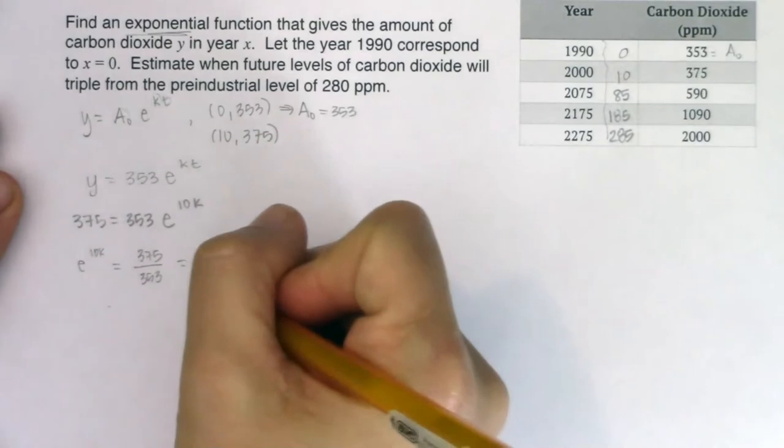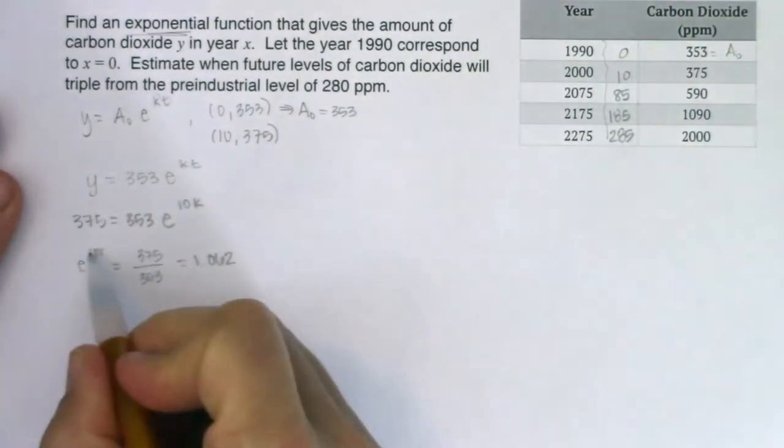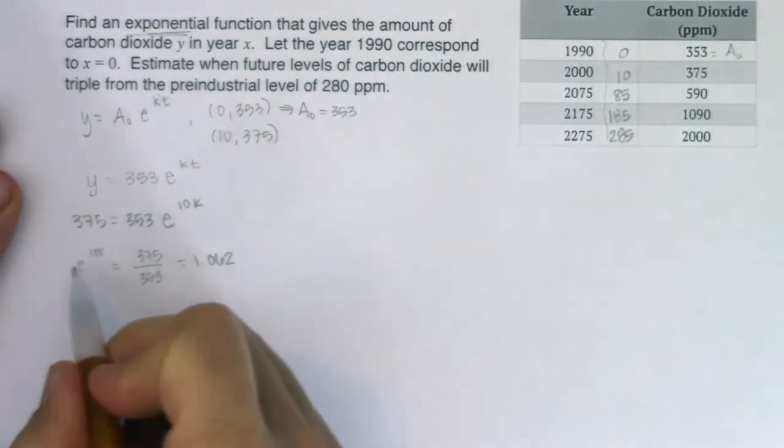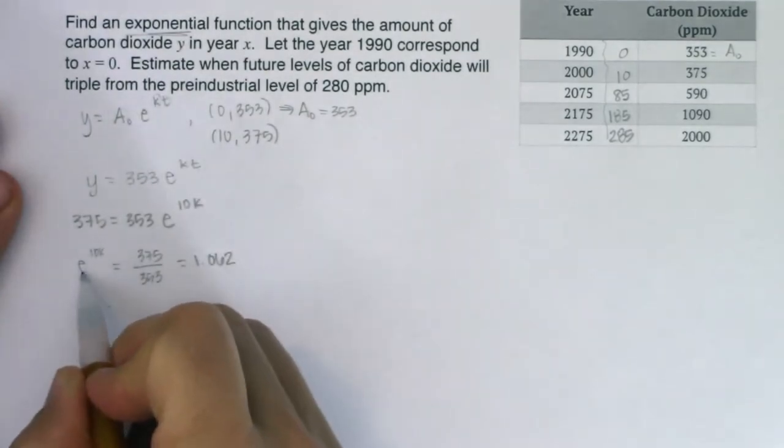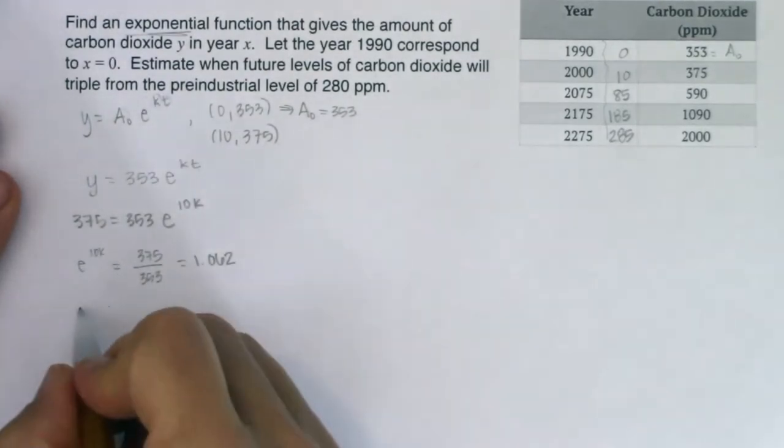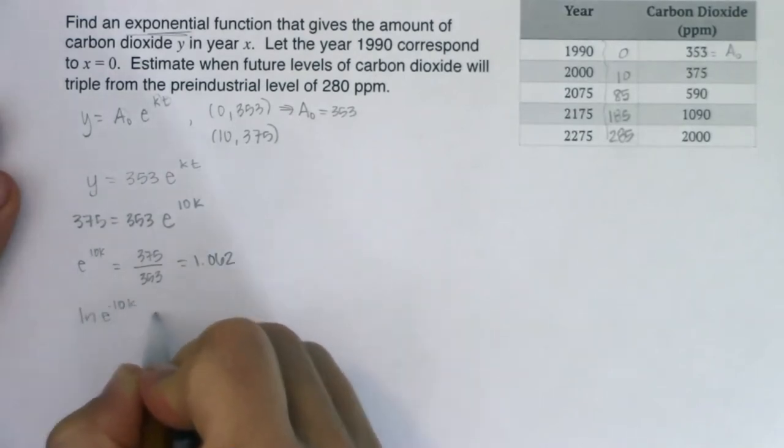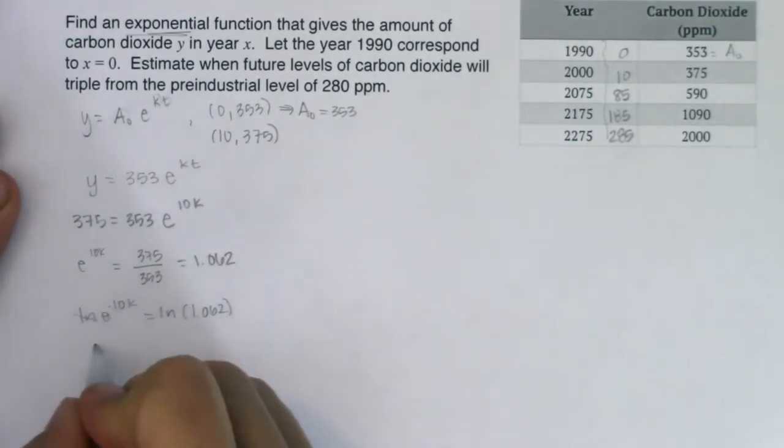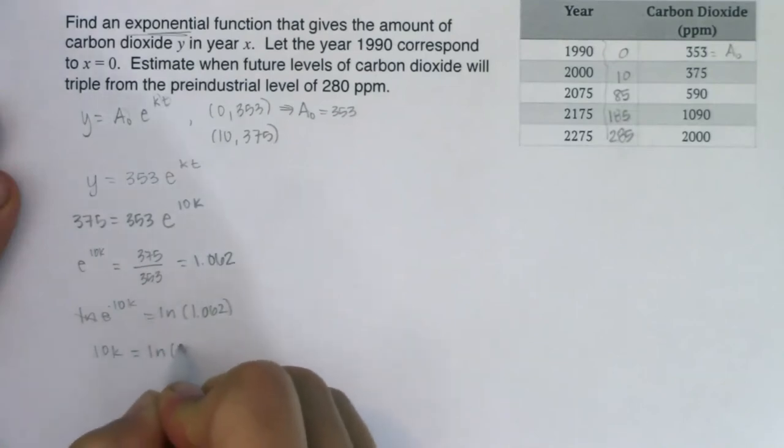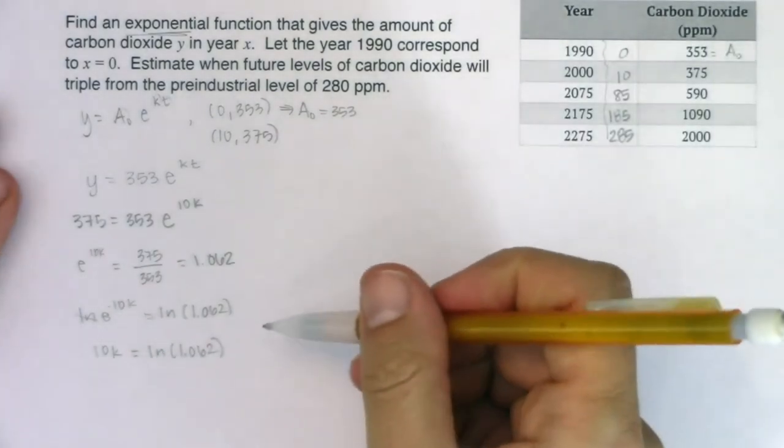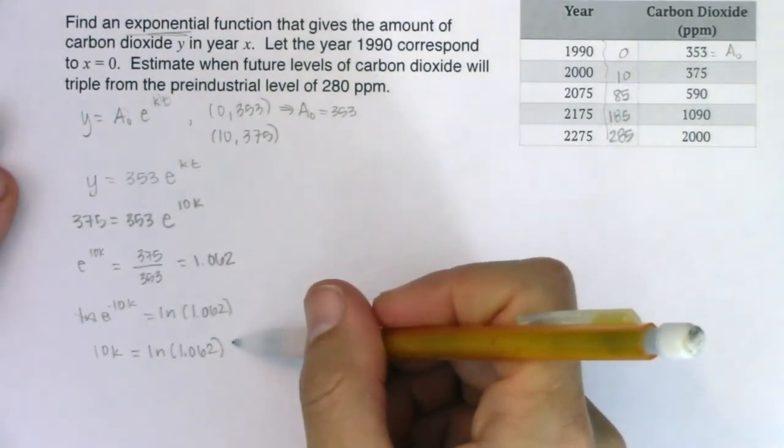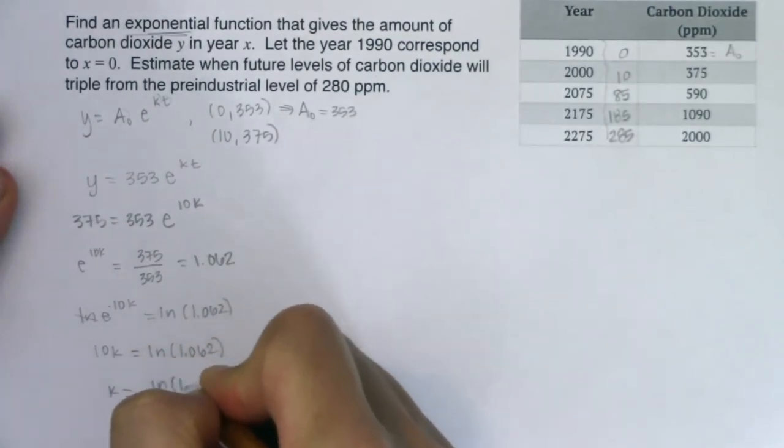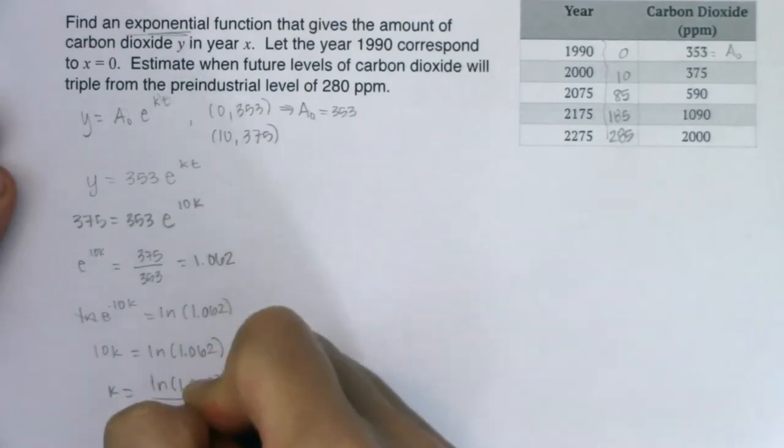Now what I want to do is log both sides. I'm going to log both sides because I have an exponential function. And if I want that exponent, that's what a logarithm is. I could log with any base. I'm going to opt to log with the natural log because I have a base e here. So ln of e^(10k) has to be equal to ln of 1.062. And then these cancel. So I'm going to get 10k is equal to ln of 1.062. This is just a number. I will crunch it on my calculator. And ultimately, k will be equal to ln of 1.062 divided by 10.